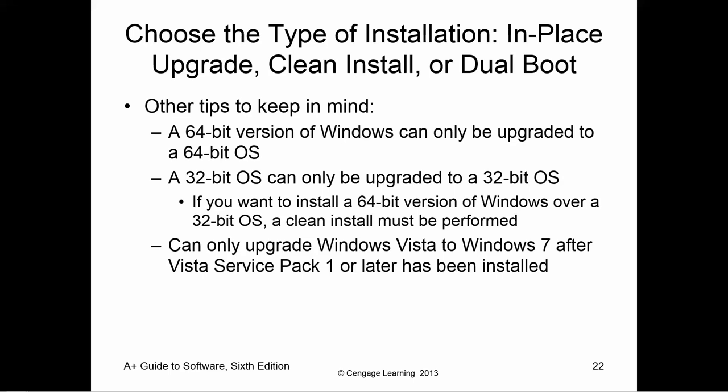Other things to keep in mind: what bit version are you running? If you have a 32-bit copy of Vista, you cannot upgrade to a 64-bit copy — you have to stay within the bit version. So if you have Vista Business 64-bit, you can upgrade to Windows 7 Professional, Enterprise, or Ultimate, but only in the 64-bit version. Also, if you're going from Vista to Windows 7, you have to have Service Pack 1 or later.